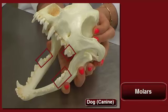Lastly, we can see the molars. These are the teeth farthest back in the mouth behind the premolars. They're used for grinding food into small pieces for digestion.